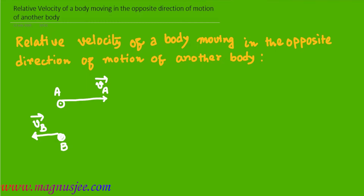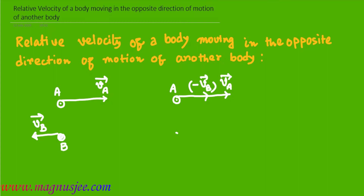We can subtract the velocity of body B from the velocity of body A. In this case, body B was moving towards left, so here we have to consider minus vB with the velocity of body A.